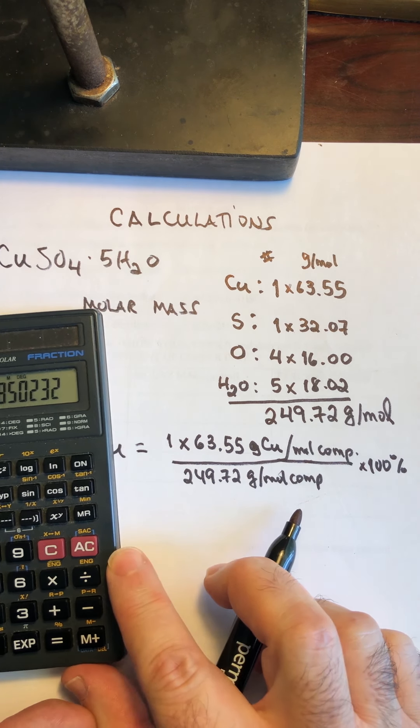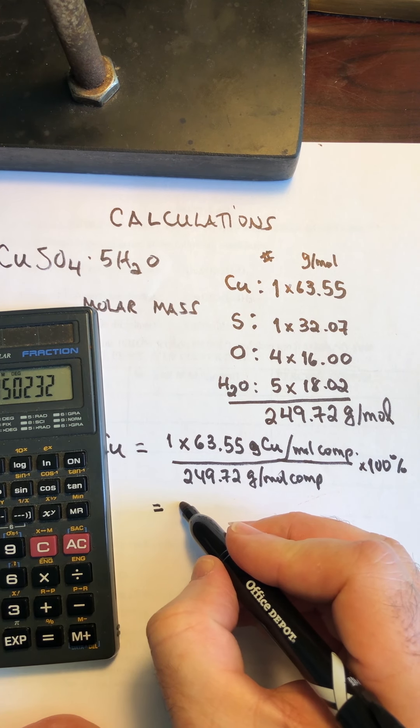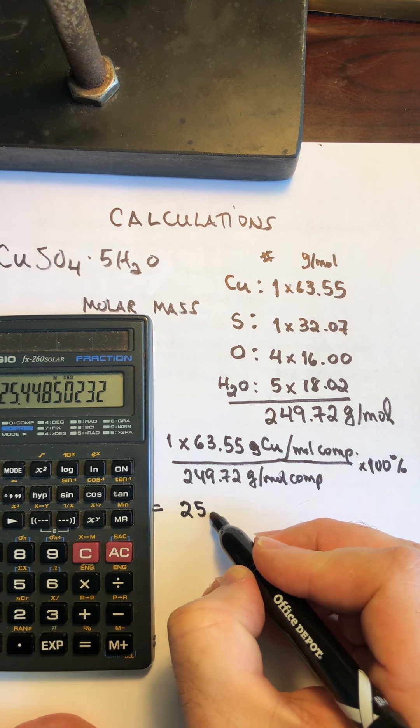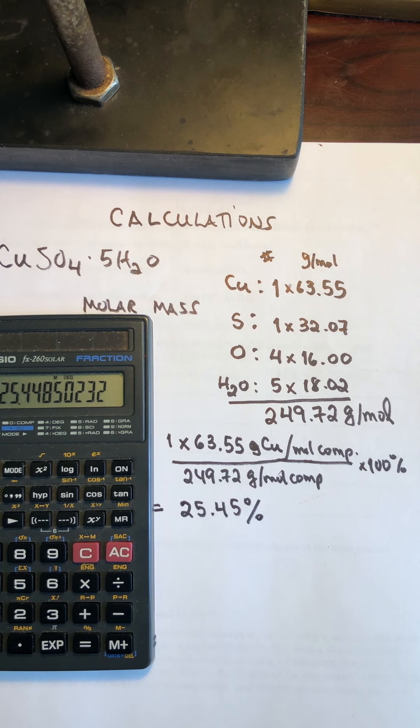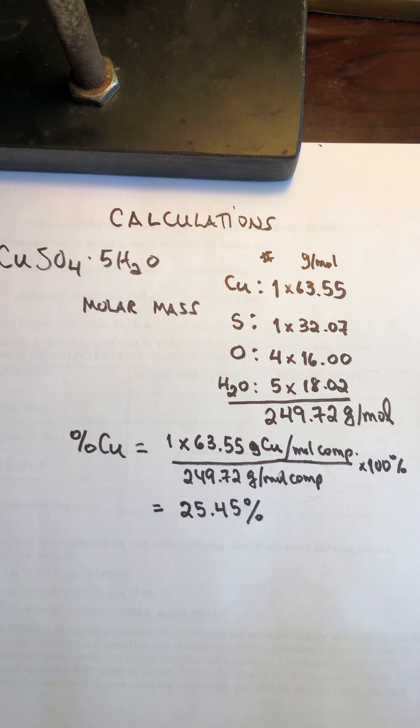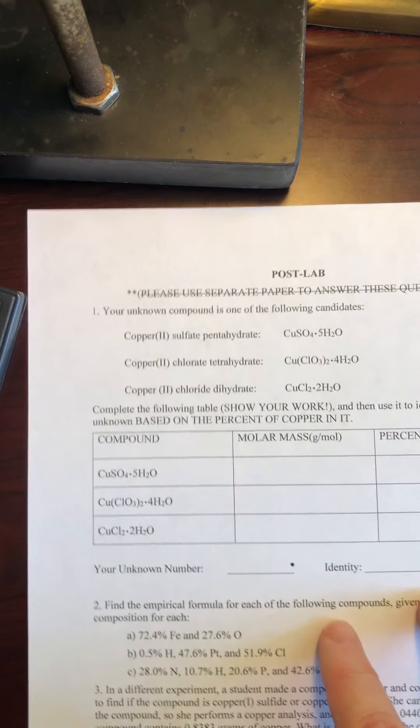we have to round it to 4 sig figs. Remember, the times 100 is just used to move the decimal period. So we're going to round this to 25.45%. Okay, so those are our numbers. Let me roll this out of the way here again so we can see our post lab page.